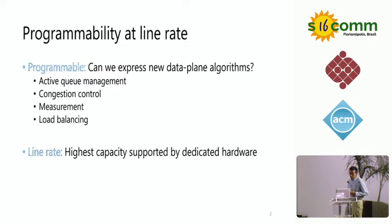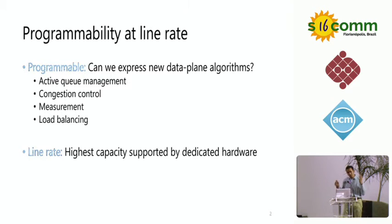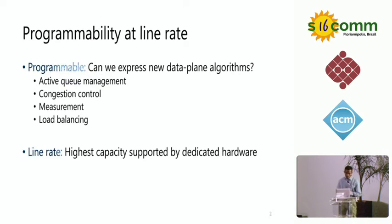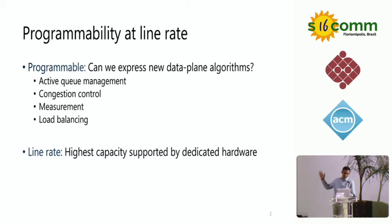Why care about this problem, and why now? For the first time it's actually practical to build programmable switching chips that run at essentially the same performance as the fastest line rate chips and still provide some amount of programmability. A few examples are Intel's FlexPipe, Cavium's Xpliant, and Barefoot's Tofino.